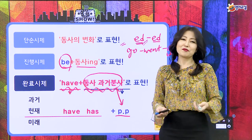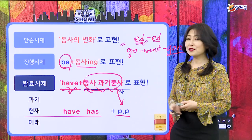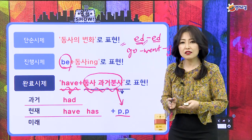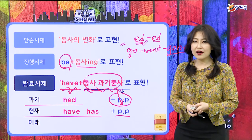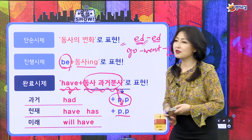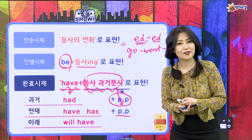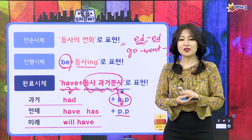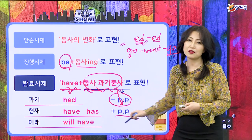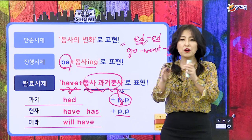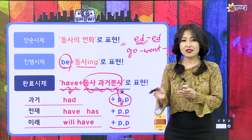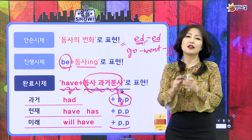현재 완료 시제에서 현재인지 과거인지 미래인지를 결정하는 건 have가 하는 거예요. 얘는 모양이 이미 정해져 있어서 앞에 거를 바꾸는 거예요. 현재의 have 말고 또 has가 있었죠. 그리고 has에 과거분사가 오게 되는 거예요. 과거는 have의 공통 과거 형태인 had가 오고 뒤에 과거분사가 붙어요. 미래는 will have가 정해져 있고 뒤에 과거분사 모양이 와서 완료 시제를 나타내는 폼이 완성되는 거예요.